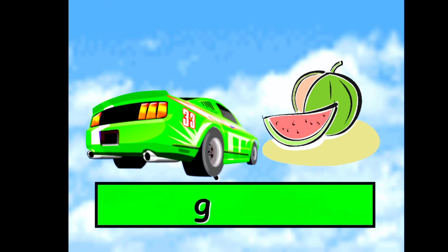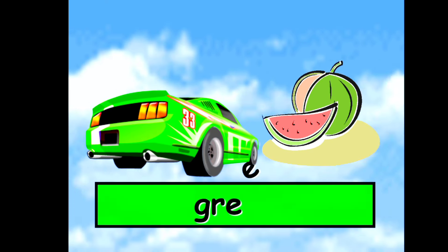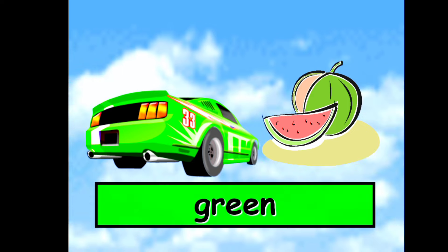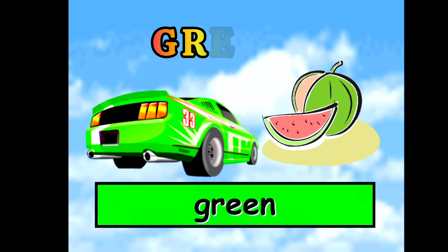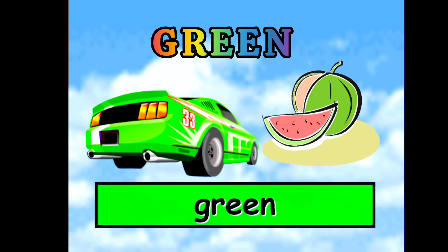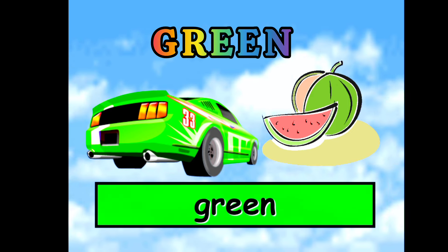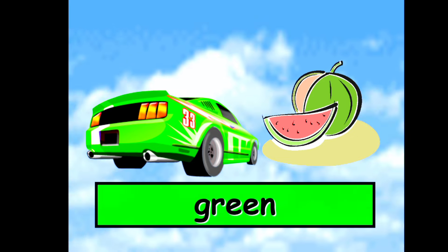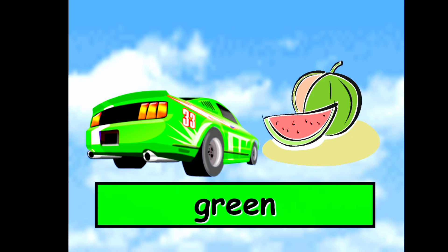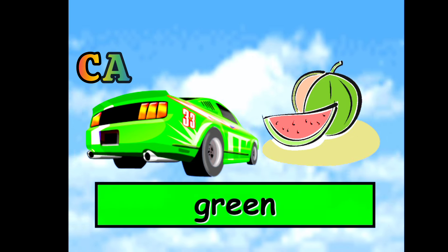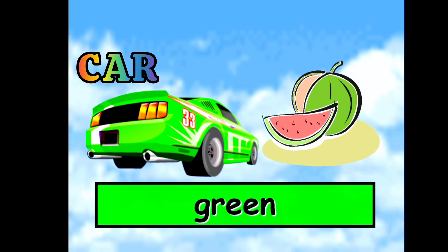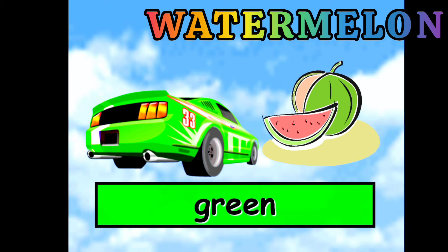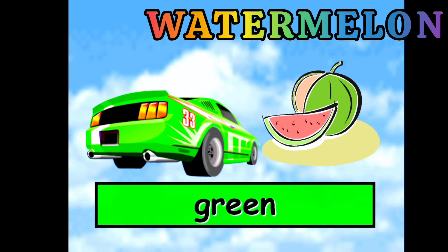Next is, this is a green color. G-R-E-E-N. Green color. So what you can see in green color? Green car and green watermelon.